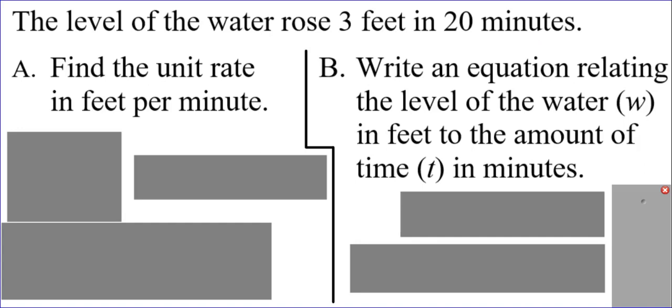It says the level of water rose 3 feet in 20 minutes. Part A says to find the unit rate in feet per minute. Part B says to write an equation relating the level of water (w) in feet to the amount of time (t) in minutes.